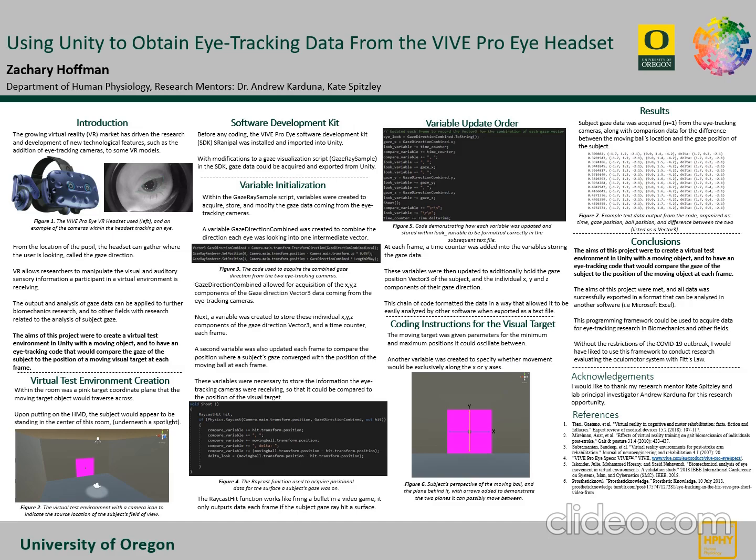I also created a time counter in each frame that told me how long it had been since the protocol was launched. Another variable was then created that would store the position that the subject was looking at and data from the position of the moving ball at each frame so they could be compared. To get a position value from the gaze direction, I used a raycast hit function.